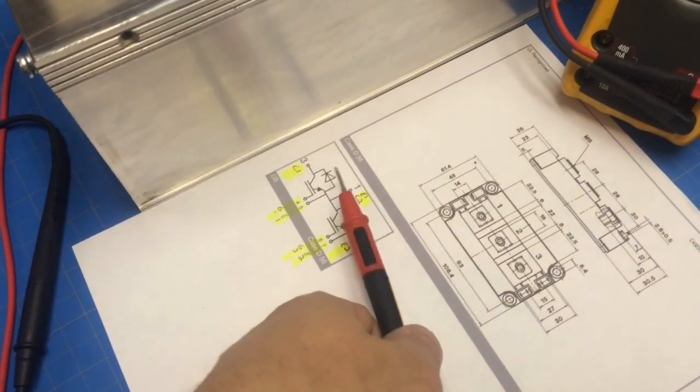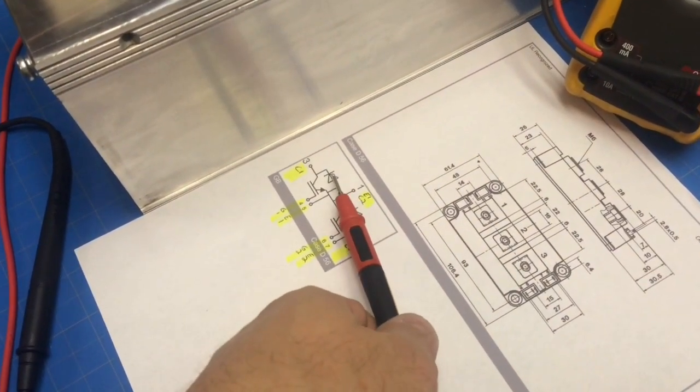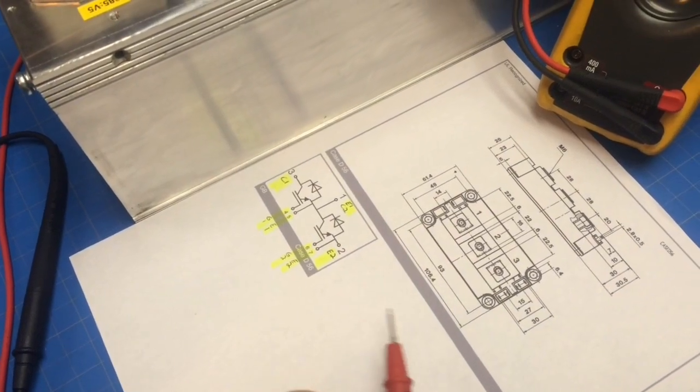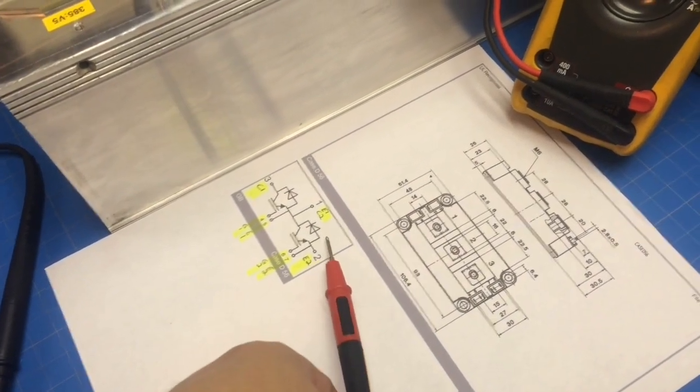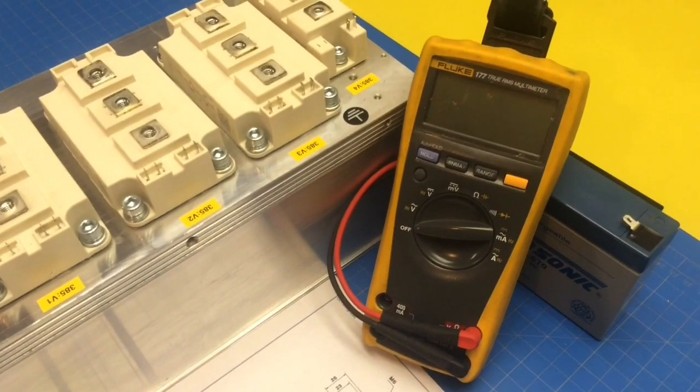So on this dual IGBT brake, we have two freewheel diodes and two gates. That's what we're going to take a look at. First, we'll go ahead and put the meter on diode test.